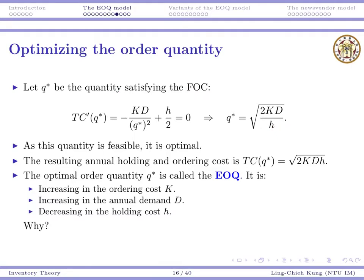We can plug q* back to the TC function and get the resulting annual holding and ordering cost. When the unit ordering cost or holding cost becomes larger, the total cost becomes larger. If you have more demand to be satisfied, your cost becomes larger. When we talk about cost, more demand just requires more cost. All three things increase cost in a square root manner—they're inside a square root function.